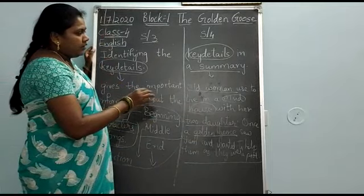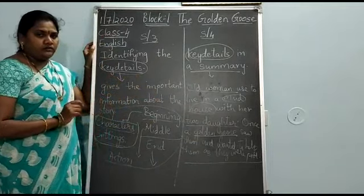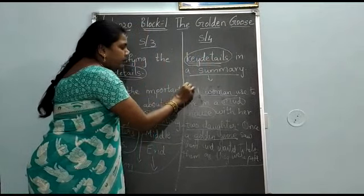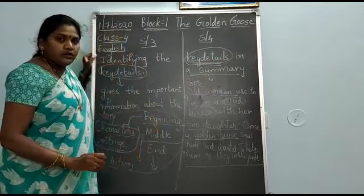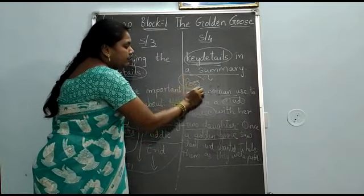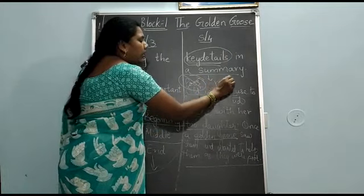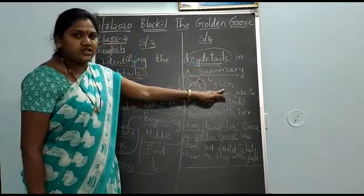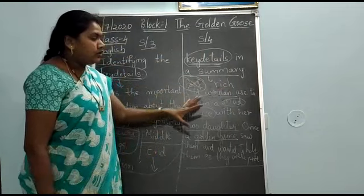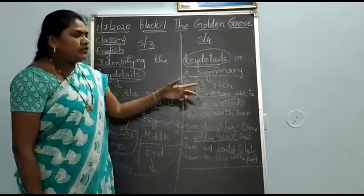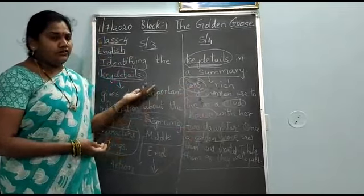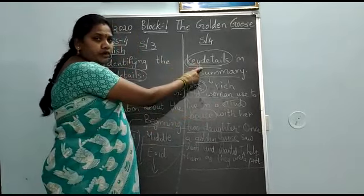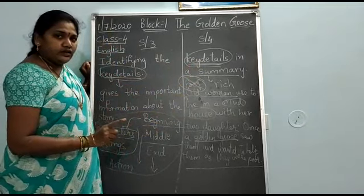If I want to change one key detail in the story — that is, the poor old woman. Actually the woman and her two daughters were poor. If I change that one key detail, the whole story will change. If the woman is rich, they have lots of money. Instead of a mud house, they might have lived in a palace. So key detail is so much important that it changes the whole story.